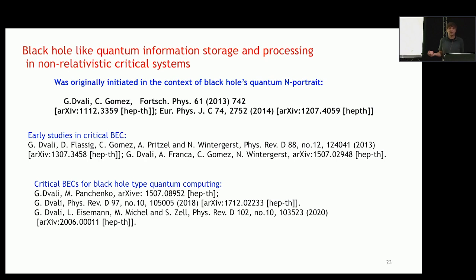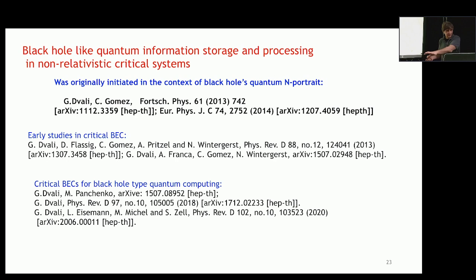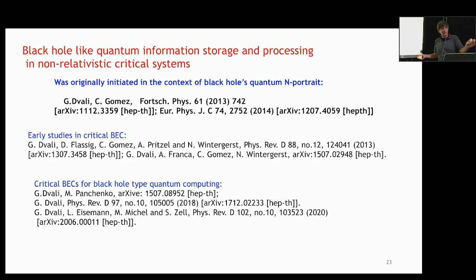Saturons are also interesting because they have non-relativistic counterparts, and those non-relativistic counterparts can potentially be produced in the laboratory. This started historically because we had an idea — my collaborator Cesar Gomez and I — to describe a black hole as a Bose-Einstein condensate of gravitons at high occupation number at criticality. Our idea was that if that's what matters for black hole properties, then other critical systems should exhibit similar behavior. So we started exploring non-relativistic bosonic systems and Bose-Einstein condensates at criticality.